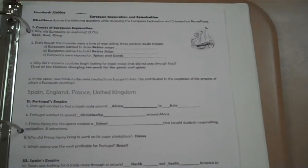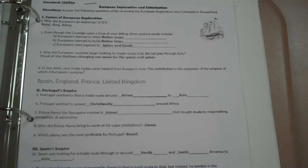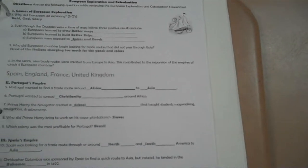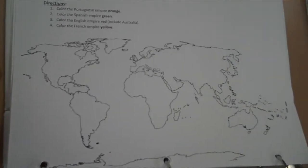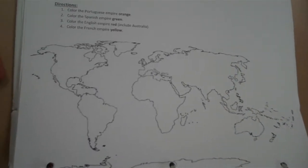Next we have your Age of Exploration, European Age of Exploration and colonization. It's the one that has a little sailboat on it. And then on the back of that I had a map, a real map, where you can show where each of these areas were colonized.